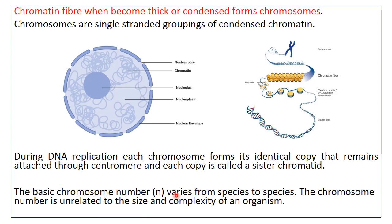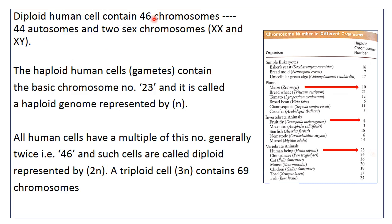Every diploid human cell contains a total of 46 chromosomes. These 46 chromosomes can be separated into two groups: 44 chromosomes that form autosomes, which are the same in both male and female, whereas the 23rd pair — the last pair — forms the sex chromosomes. These are XX in females and XY in males.